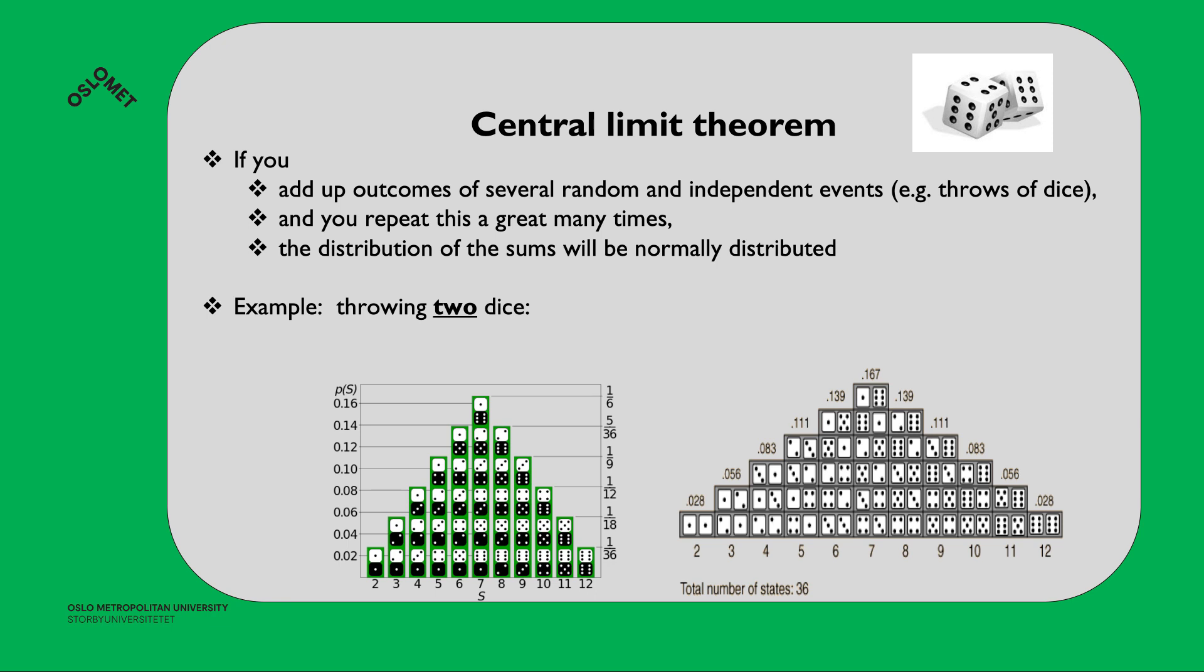You can try this - take two dice and repeat a great many times the throws, then write down the sum of the two dice, and you will get a normal distribution.